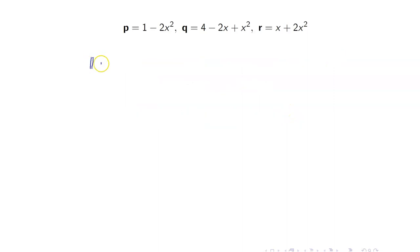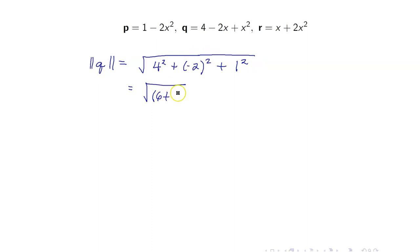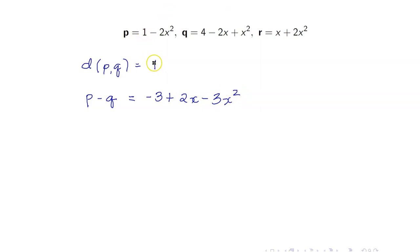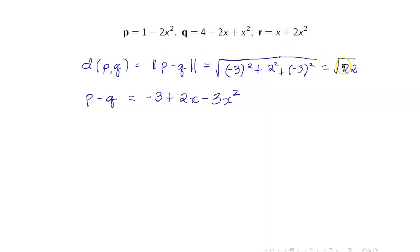Next, let us get the norm of Q. This is the square root of 4 squared plus negative 2 squared plus 1 squared, which is 16 plus 4 plus 1, or the square root of 21. Lastly, the distance between P and Q: we compute P minus Q, which equals negative 3 plus 2x minus 3x squared. Therefore, the distance of P and Q is the length of P minus Q, equal to the square root of negative 3 squared plus 2 squared plus negative 3 squared, which equals the square root of 22.